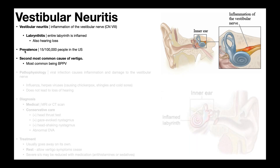The prevalence of vestibular neuritis has it affecting 15 out of every 100,000 people in the United States. This makes it the second most common cause of vertigo, the most common cause being benign paroxysmal positional vertigo, or BPPV.